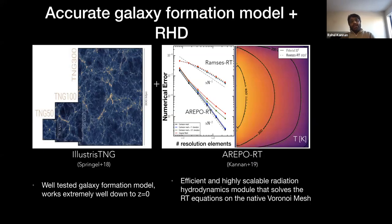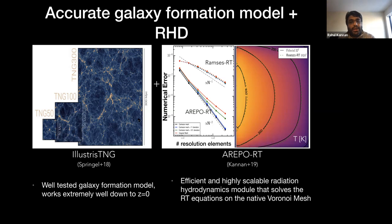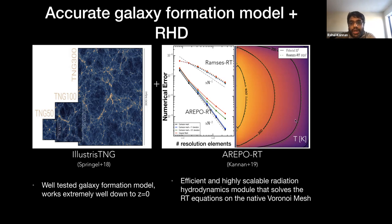So what goes into THESAN? We have combined the IllustrisTNG galaxy formation model — not the simulations, but the galaxy formation model used in TNG, which we know has accurate predictions down to redshift zero — with the AREPO-RT radiative transfer code, which was written by me, which is extremely efficient and solves the radiation hydrodynamic equations on the native Voronoi mesh of the code.